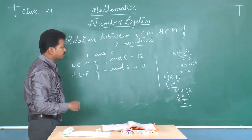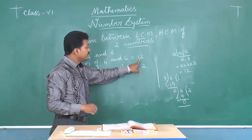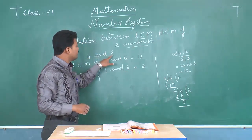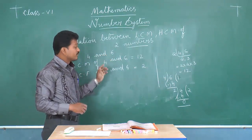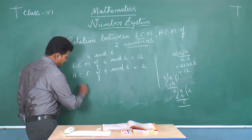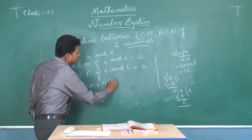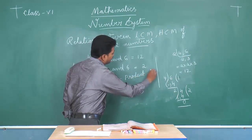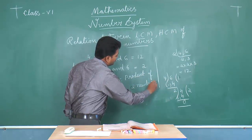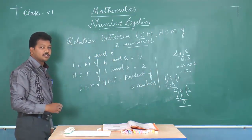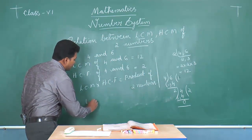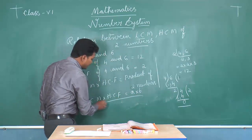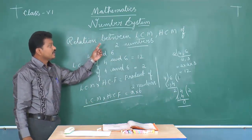Now, how is the relation? When you multiply HCF into LCM, that is twelve into two equals twenty-four. When you multiply both numbers, four times six also equals twenty-four. Therefore, LCM into HCF is equal to the product of the two numbers. If A and B are the two numbers, then LCM into HCF is equal to A into B. This is the relation between LCM and HCF of two numbers.